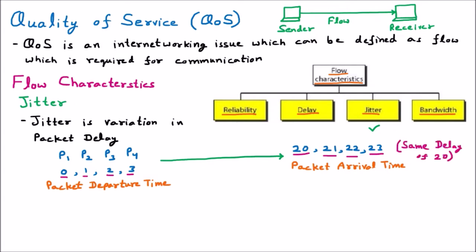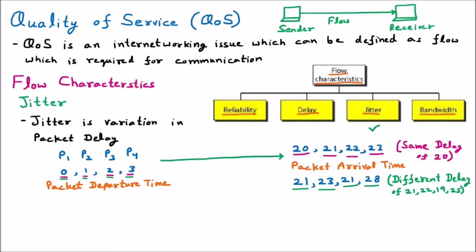Now in Case 2, the packets do not have the same delay. Packets arrive at times 21, 23, 21, and 28. The packet started at 0 reached at 21 — difference is 21. Started at 1, reached at 23 — difference is 22. Started at 2, reached at 21 — difference is 19. Started at 3, reached at 28 — difference is 25. This different delay — 21, 22, 19, and 25 — is called jitter.